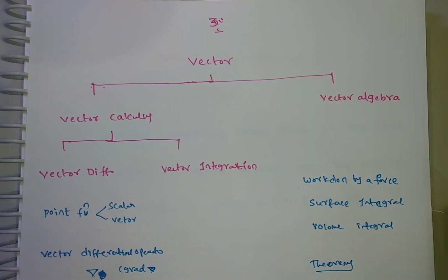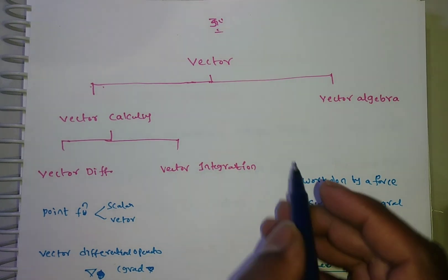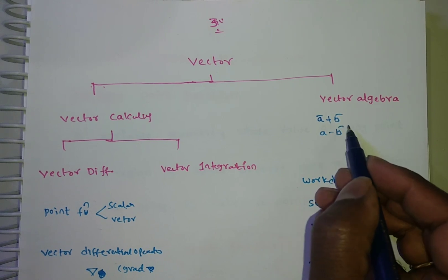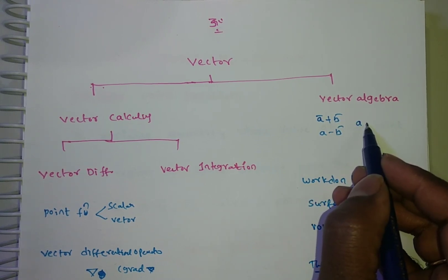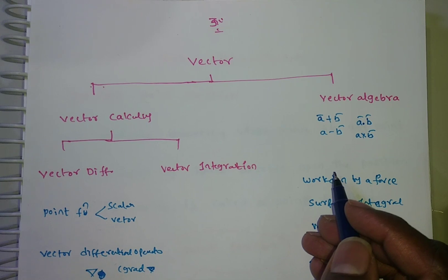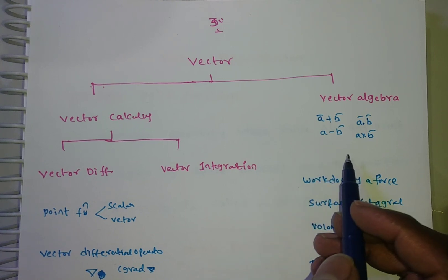In this video we are discussing the basic concepts of vectors in engineering. Up to intermediate we learned vector algebra, covering vector addition, vector subtraction, products of vectors — both dot product and cross product — angle between vectors, and unit normal vector.